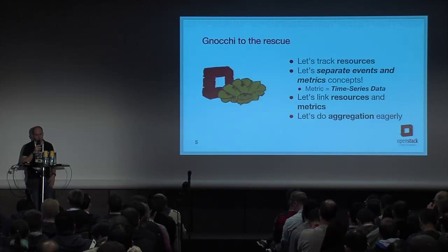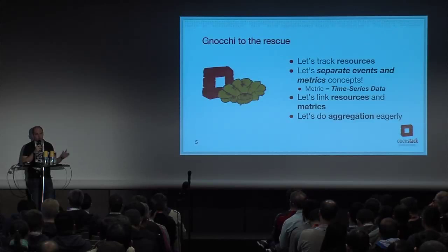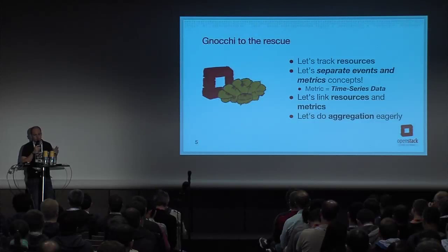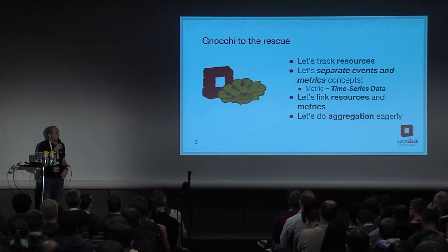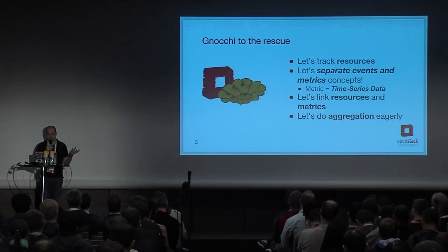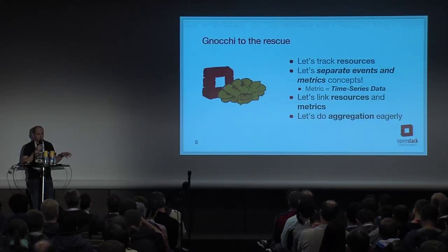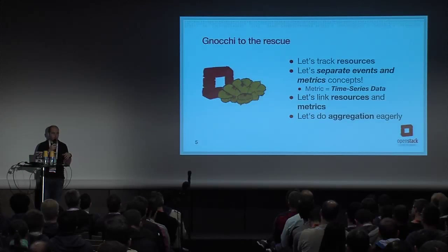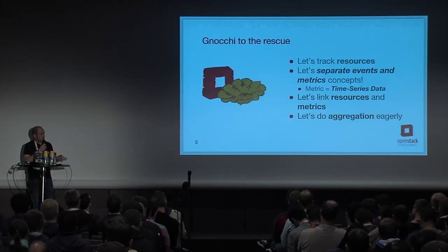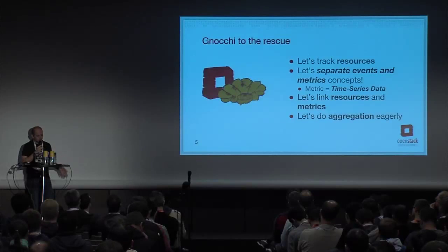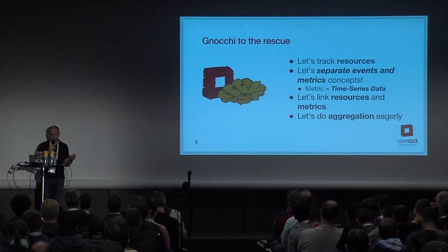What we do is link the metrics — the list of timestamp values — to a resource. We call this list of metrics an 'entity,' which I'll explain shortly. You get a list of metrics and link that to the CPU usage of an instance, the network usage, and so on. Another thing we do in Gnocchi is make some kind of trade-off on data — we do aggregation, and we do it eagerly. Most drivers do this at write time. We talked a year ago in Hong Kong about doing aggregation in Ceilometer, but it never happened for various reasons.